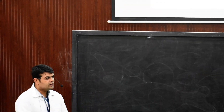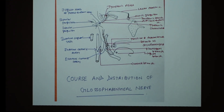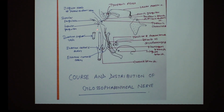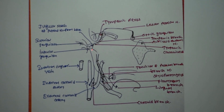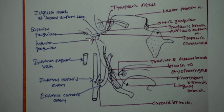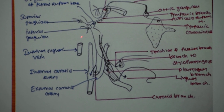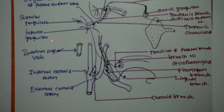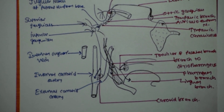After completion of the tympanic branch, we will discuss further branches of the glossopharyngeal nerve. As we have learnt, this is the tympanic branch of the glossopharyngeal nerve. Immediately in contact with that, another branch is given that is known as the auricular branch of the glossopharyngeal nerve.